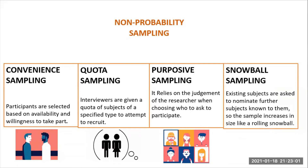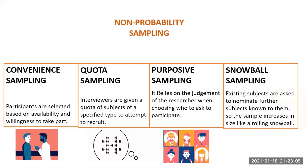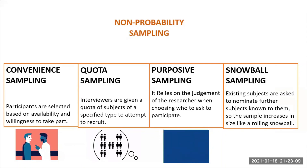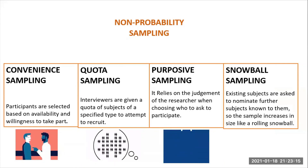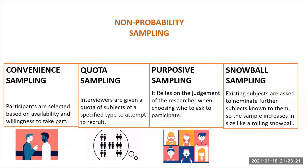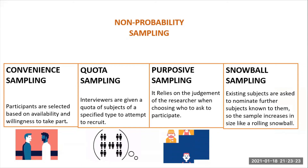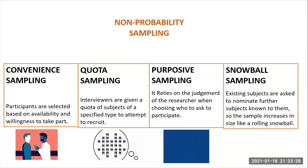Finally, snowball sampling is commonly used in social sciences when investigating hard-to-reach groups. Existing subjects are asked to nominate further subjects known to them, so the sample increases in size like a rolling snowball. For example, when carrying out a survey of risk behaviors among drug users, participants may be asked to nominate other users to be interviewed.